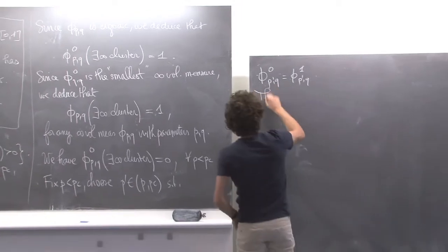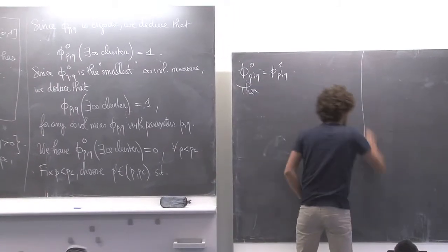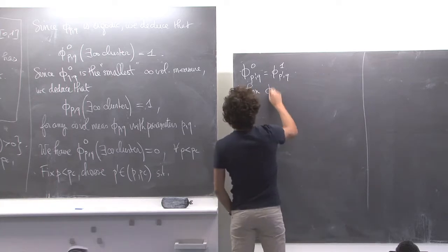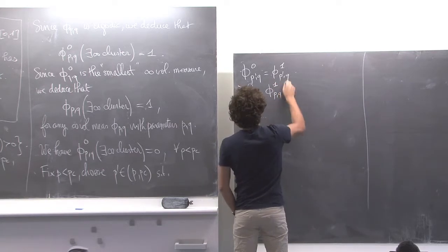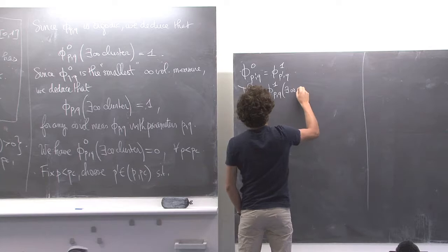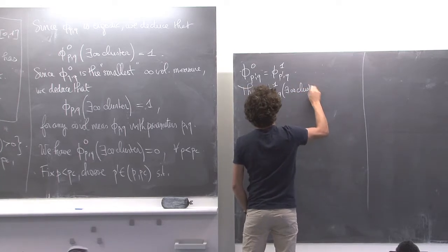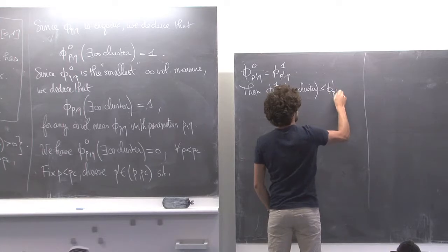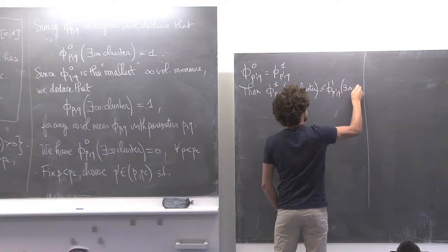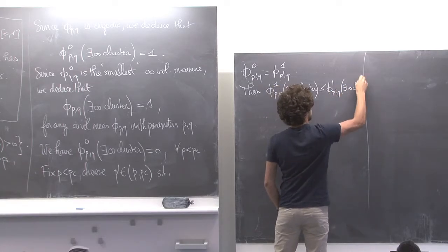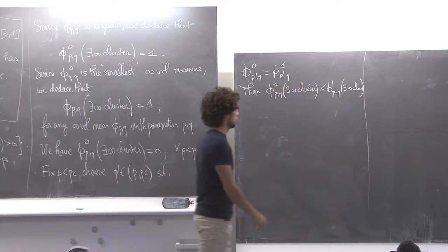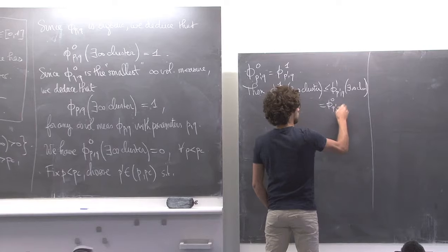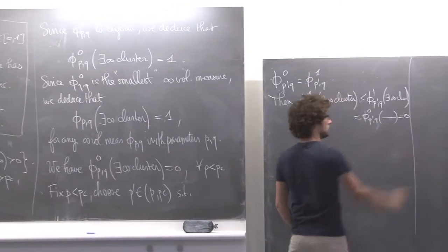Then what you deduce — and you see, everything is coming neatly now that we have the tools — is that phi_1(P,Q) of the existing infinite cluster is greater or equal to phi_1(P',Q) of the existing infinite cluster. This is just monotonicity. But this is equal to phi_0(P',Q), which is 0.